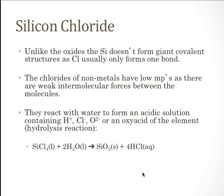Moving on to silicon chloride: unlike the oxide, silicon doesn't form giant covalent structures with chlorine — it usually forms just one bond. Silicon dioxide forms a giant covalent structure, but because chlorine only forms one bond, it can't bridge on both ends. The chlorides of non-metals have low melting points as only weak intermolecular forces exist between the molecules. These chlorides react with water to form an acidic solution containing hydronium, chloride, an oxide ion, or the oxyacid of the element — known as the hydrolysis reaction.